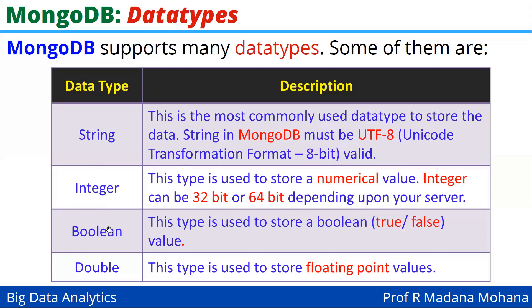Our next data type is Boolean. This is the type used to store a Boolean value, that is either true or false. The next data type is double. This type is used to store floating point values.